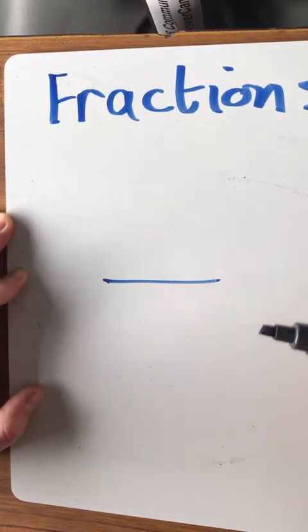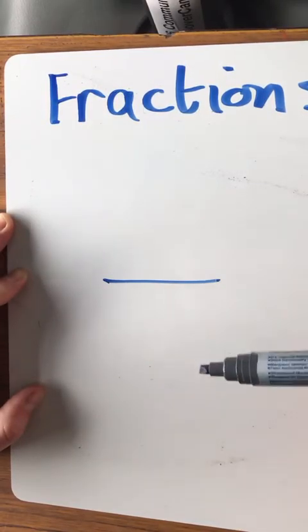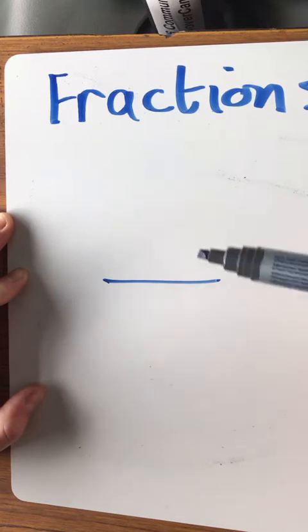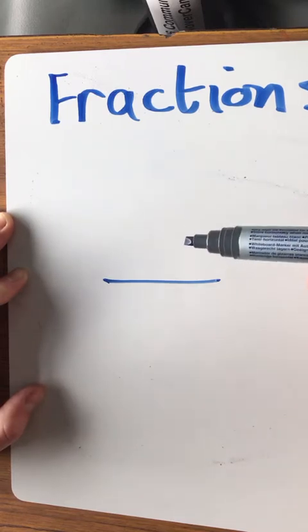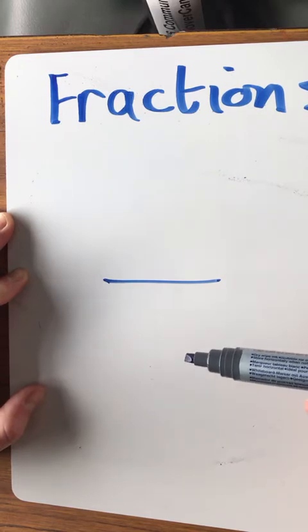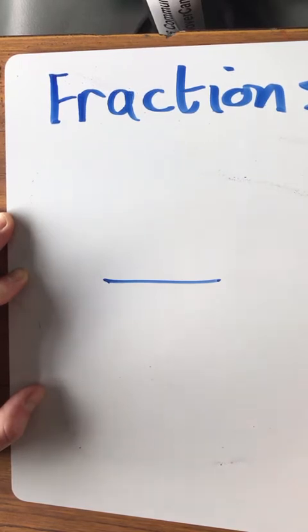So when we think of fractions, we have two numbers. We have one on top, and we have one on the bottom. The number on the top is the number we have, and the number on the bottom is the number of parts it is divided into.